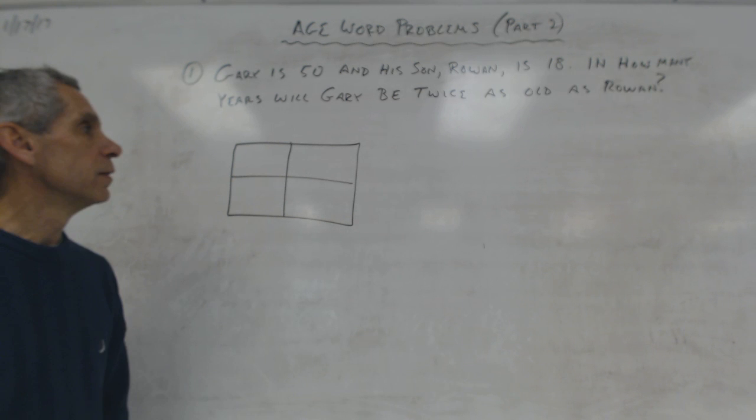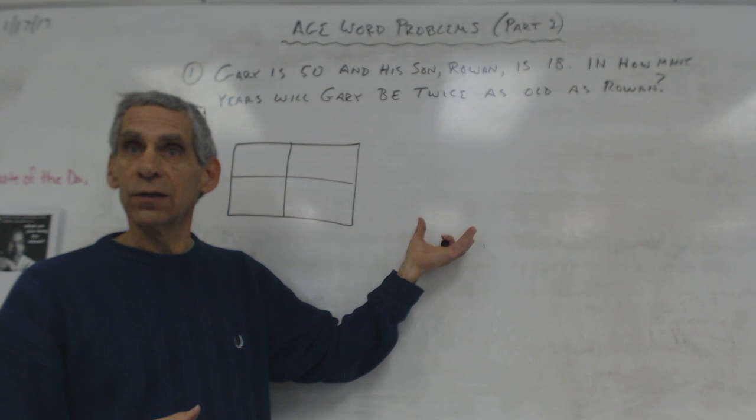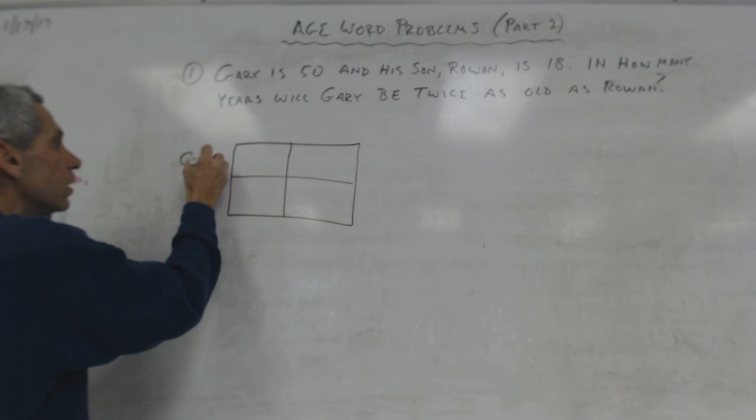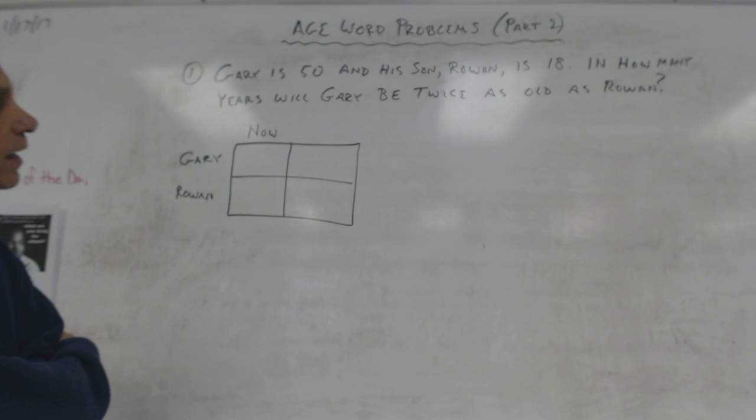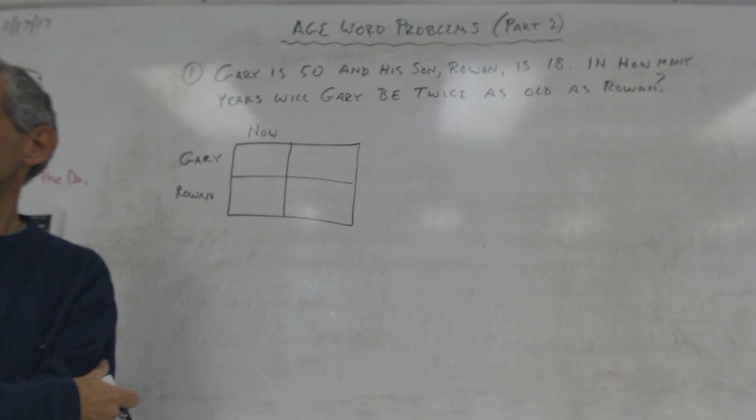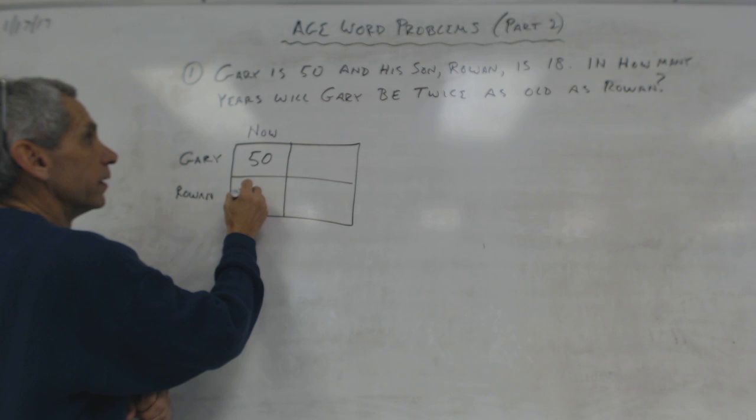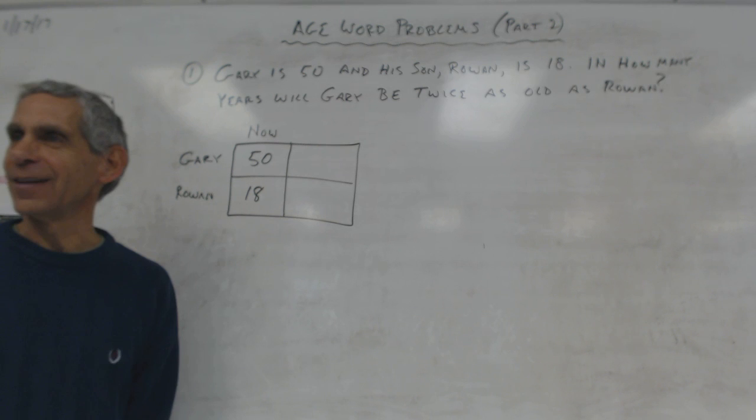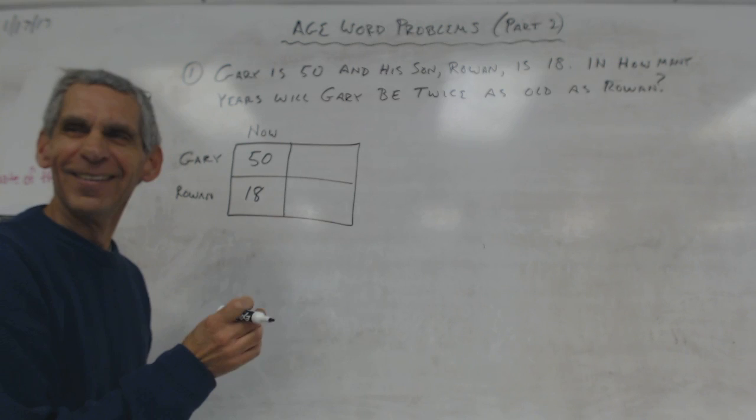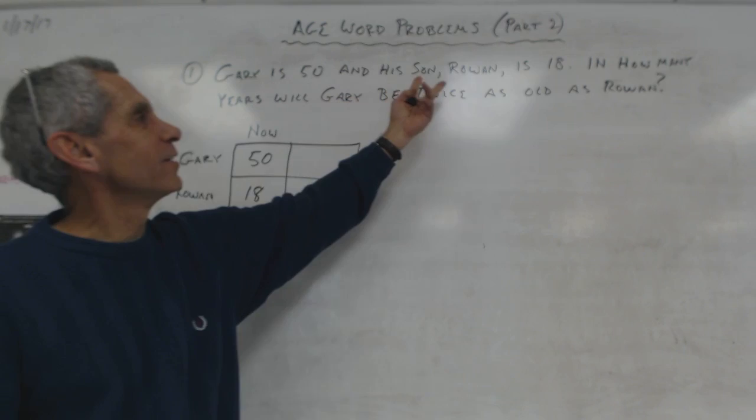I'm going to put Gary here and Rowan here, and age now. It says Gary is 50 and his son Rowan is 18. So I'm going to put 50 here and 18.